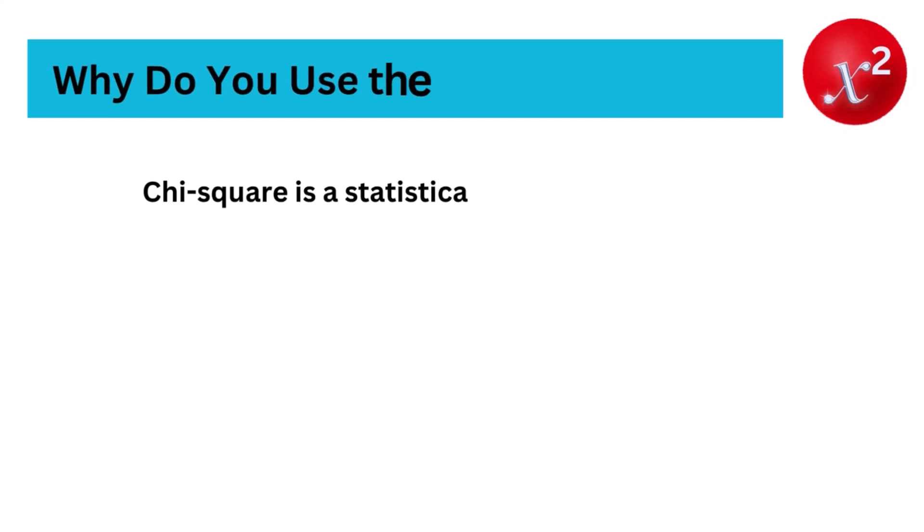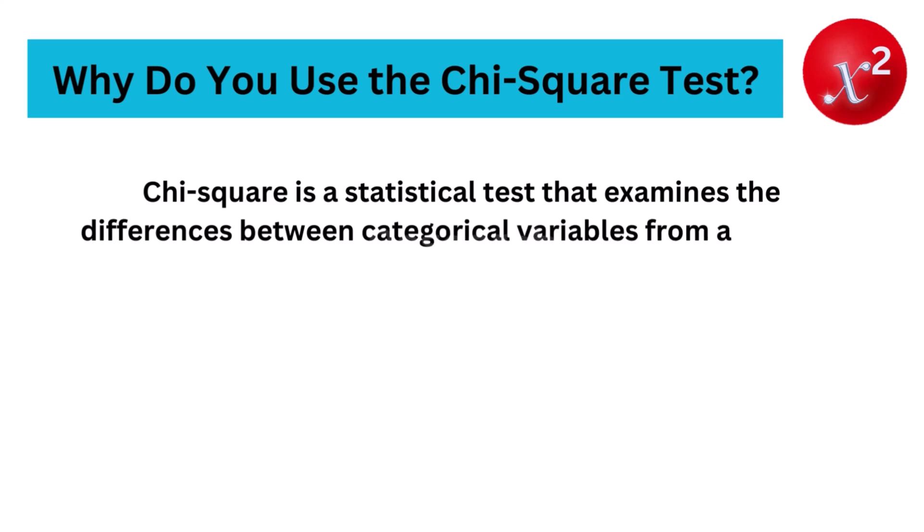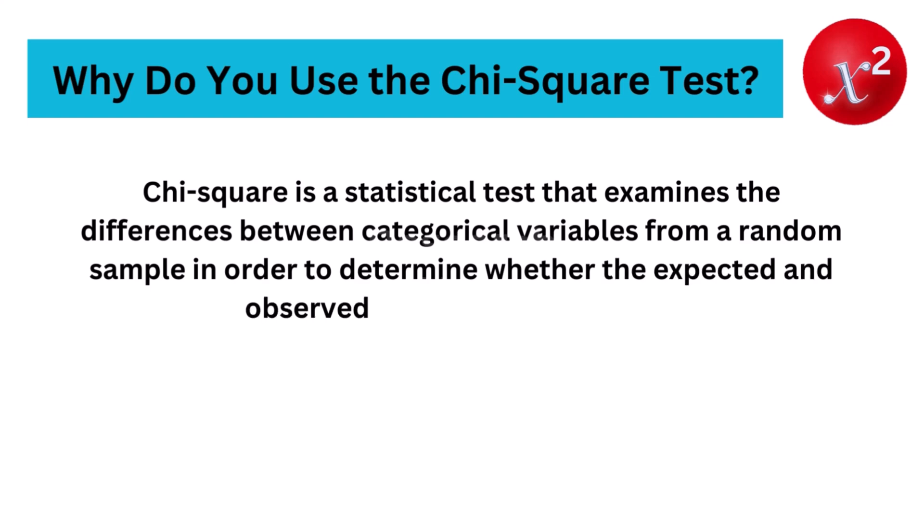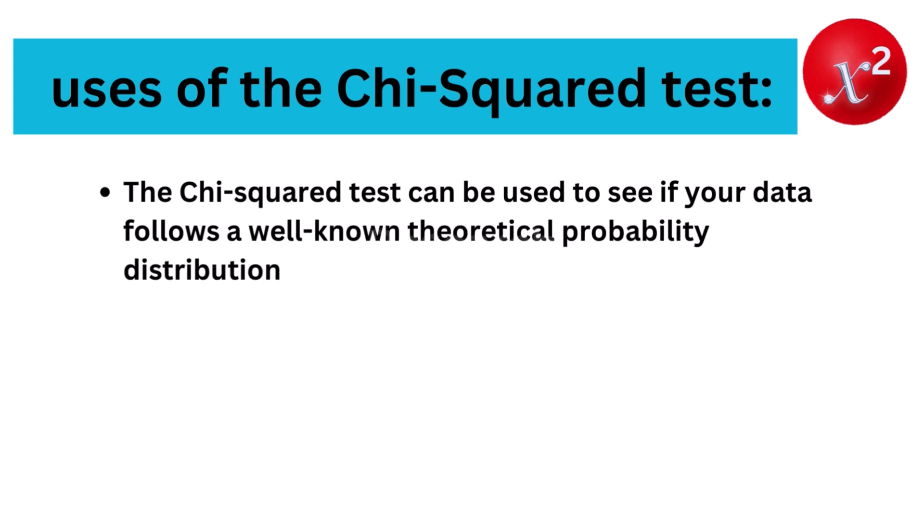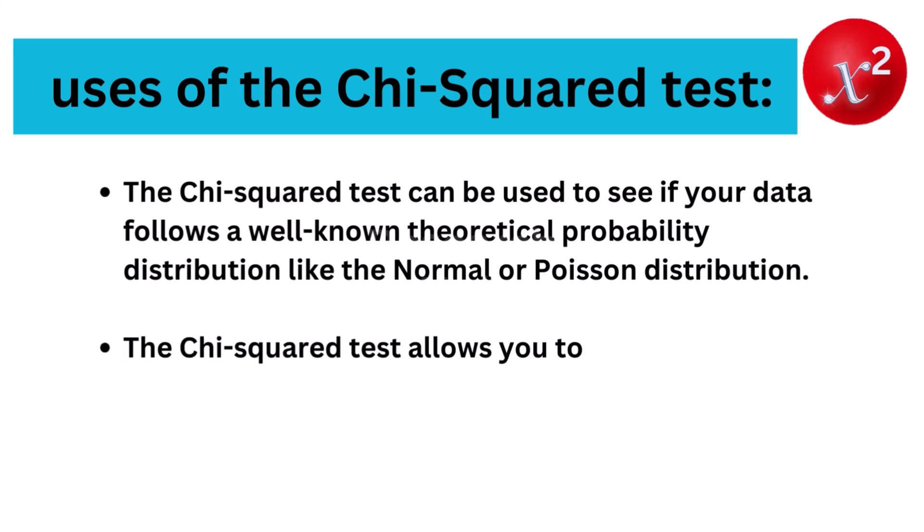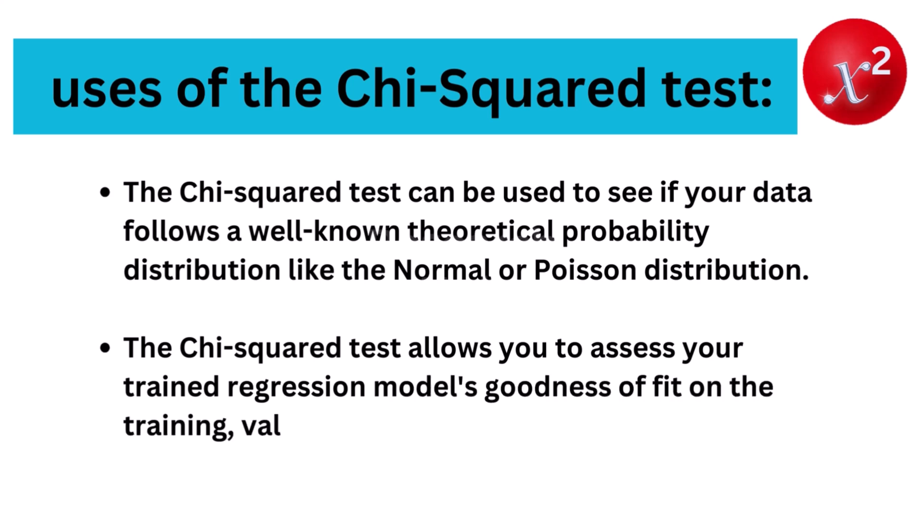Okay, why do you use the chi-squared test? Chi-square is a statistical test that examines the differences between categorical variables from a random sample in order to determine whether the expected and observed results are well fitting. Here are some of the uses of the chi-squared test. The chi-squared test can be used to see if your data follows a well-known theoretical probability distribution like the normal or Poisson distribution. The chi-squared test allows you to assess your trained regression model's goodness of fit on the training, validation, and test datasets.